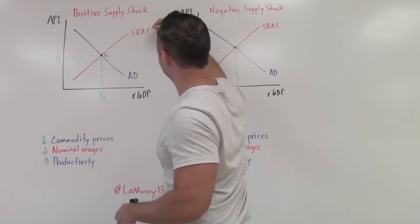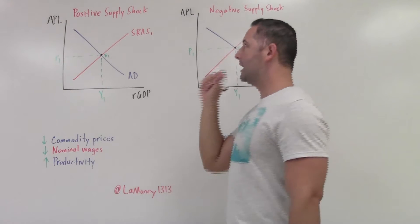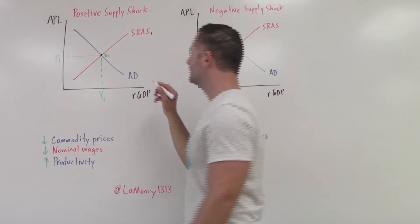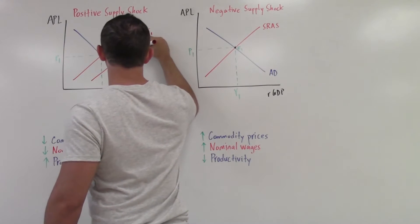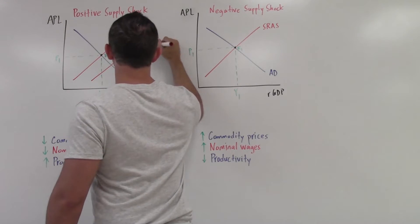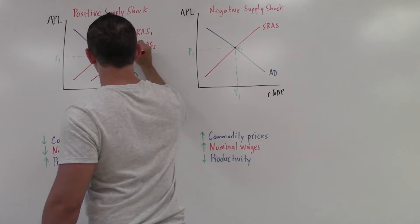So we're going to make this SRAS 1 to now show our difference. Increase, we still shift to the right. And I know that on this one specifically, the SRAS curve, this is the only one I think that can actually give people a little trouble with that.